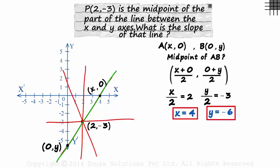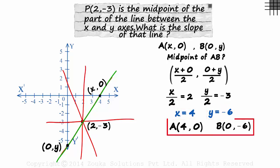With these values, A will be 4 comma 0, and B will be 0 comma minus 6. That's it! We have the endpoints and we can easily find the slope.